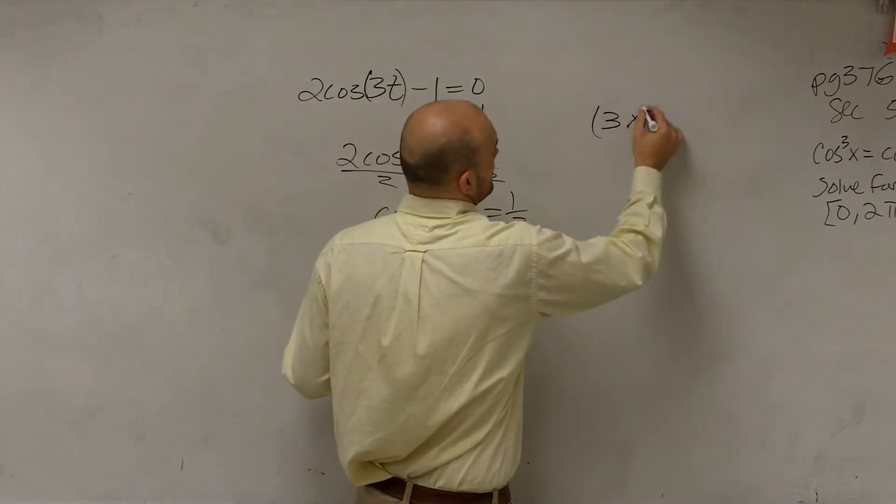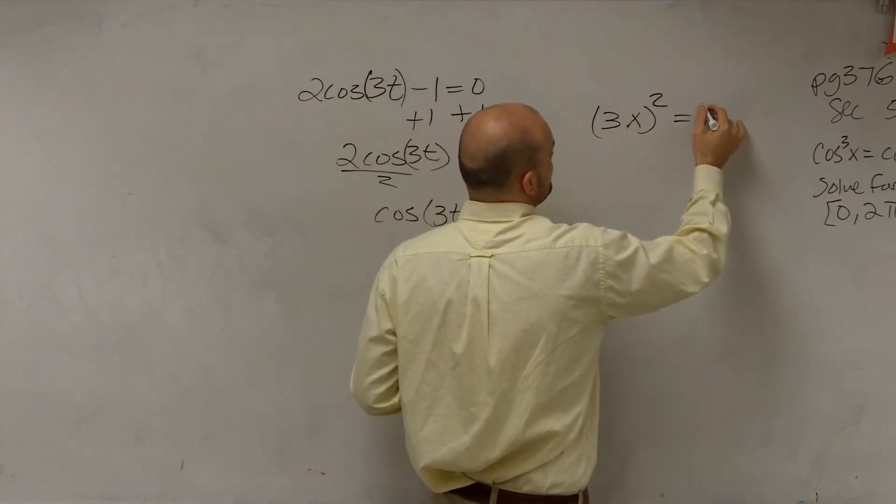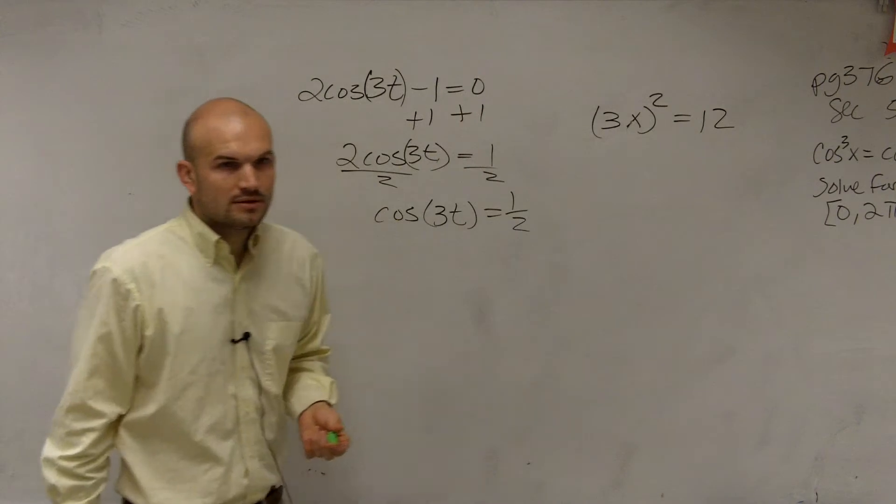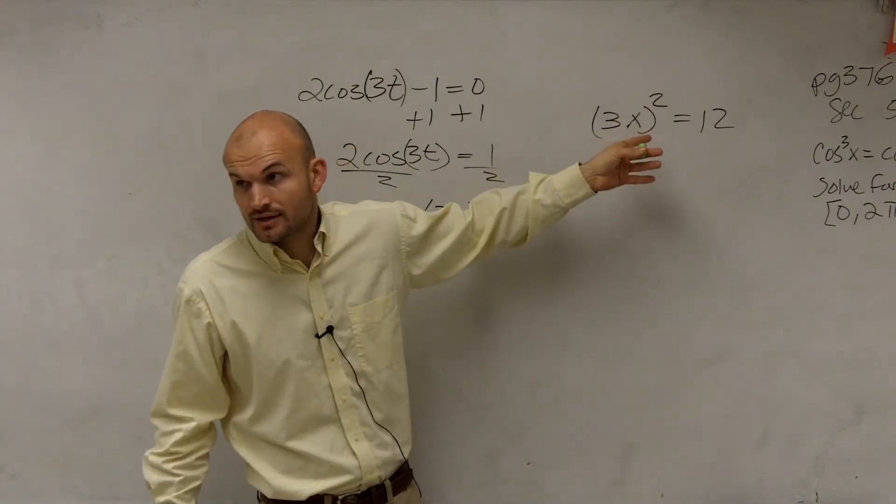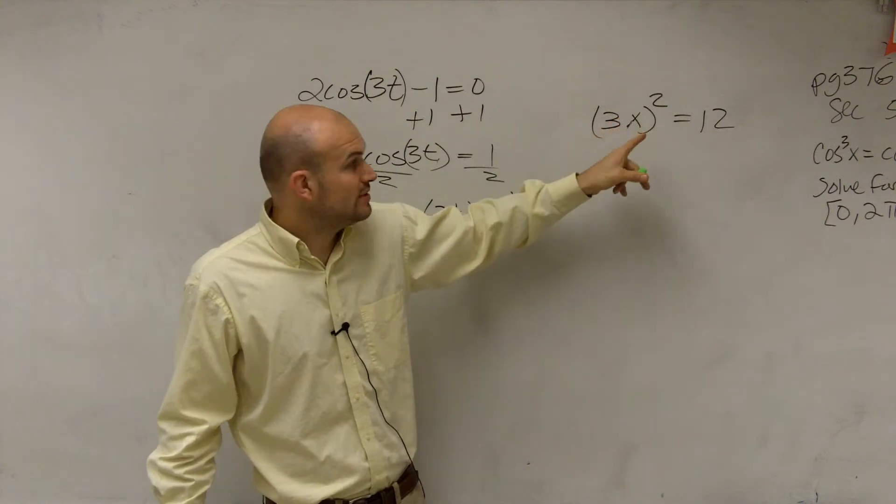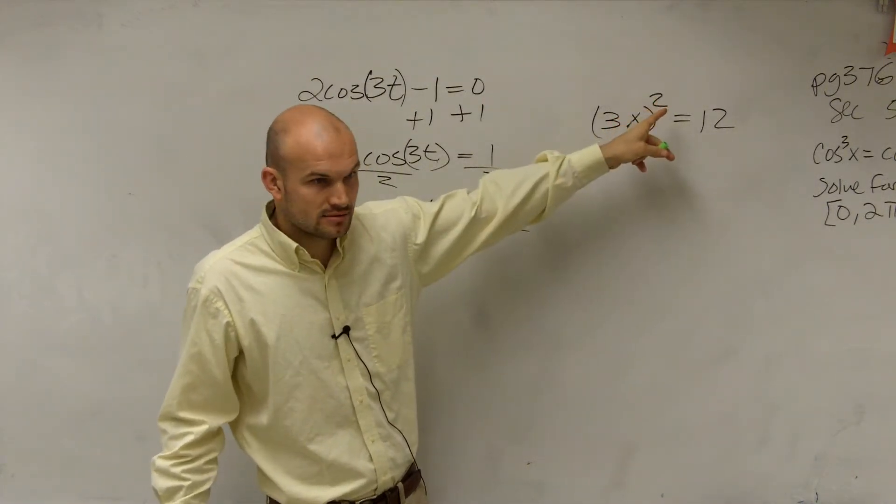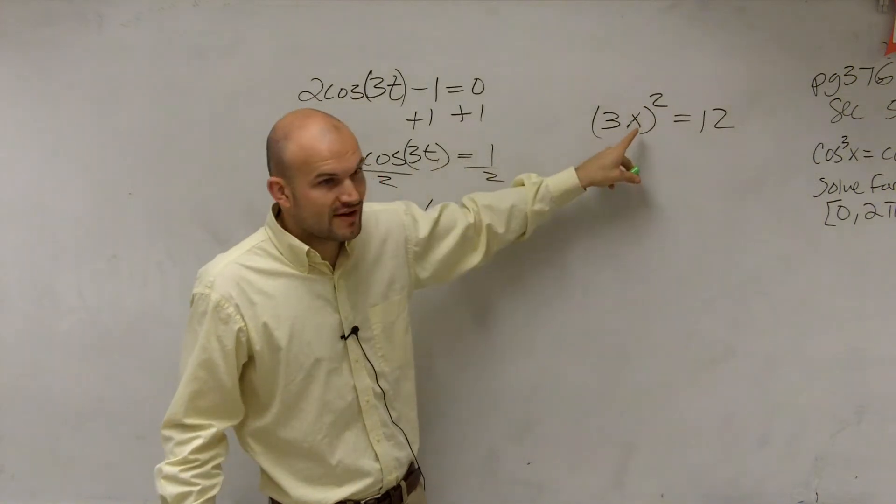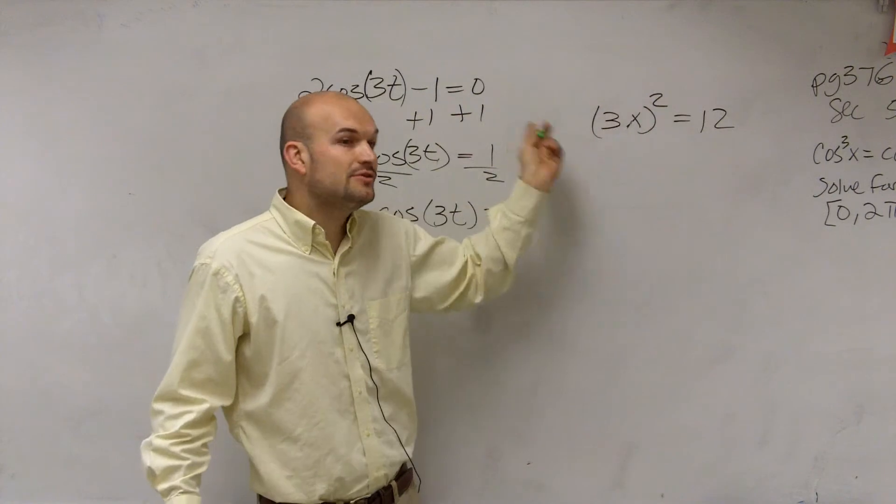It's like saying 3x squared equals 12, right? To solve this, your next step is to undo the square, right? To take the square root. You can't divide by 3, right? Because the 3 is being squared. Does that make sense? So you don't divide by 3. That's not the next step. The next step is to square root both sides. Then you divide by 3.